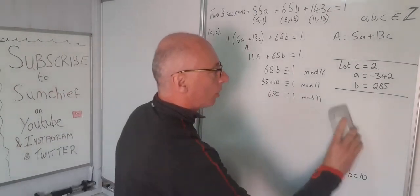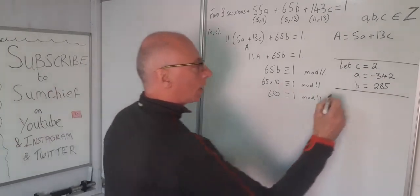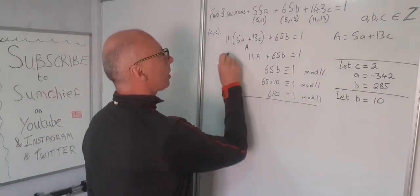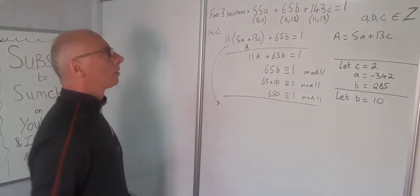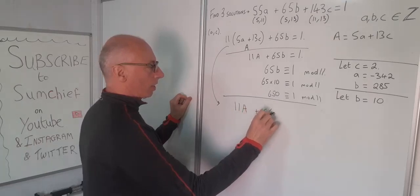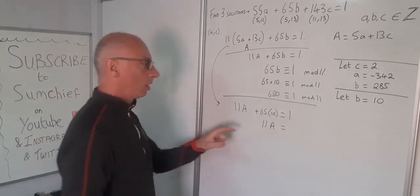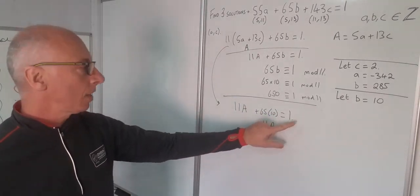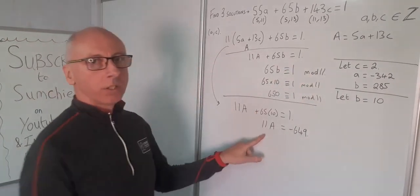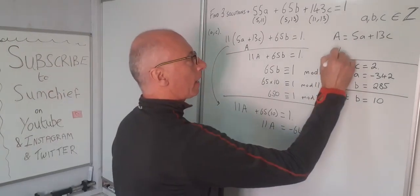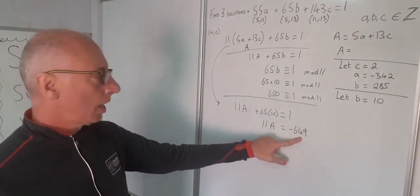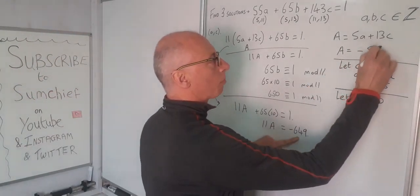Let B equal 10. So bringing this down: 11A plus 65 times 10 equals 1. So 11A equals 1 minus 650, which is minus 649. And again, because I did this part of the equation, I know I'll get an integer solution. 13 goes into 649 as 660 equals 60 times 11, so dividing minus 649 by 11 gives A equals minus 59.